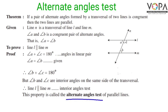This property is called the alternate angles test for parallel lines: if the alternate angles are congruent, then the two lines are parallel to each other.